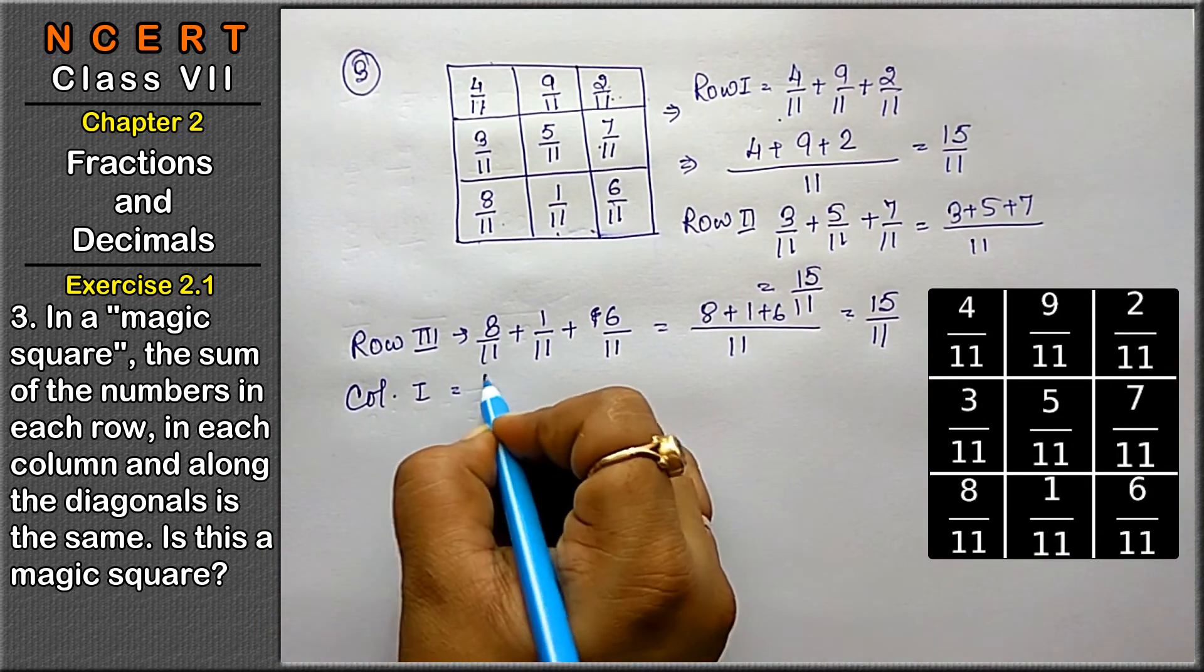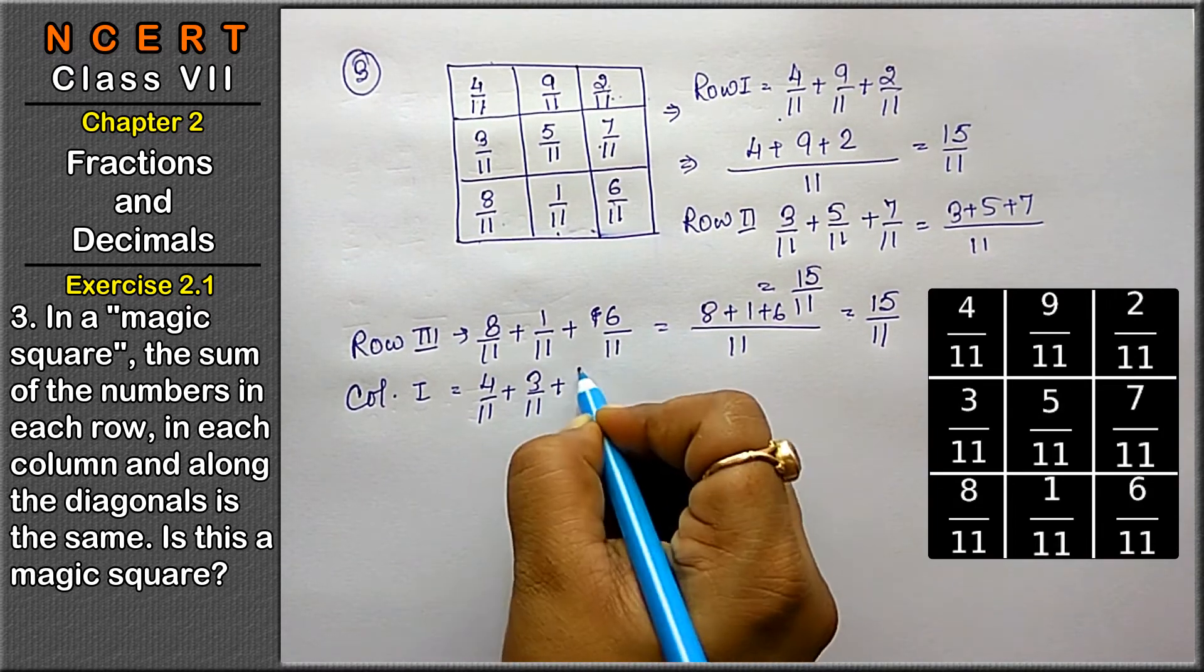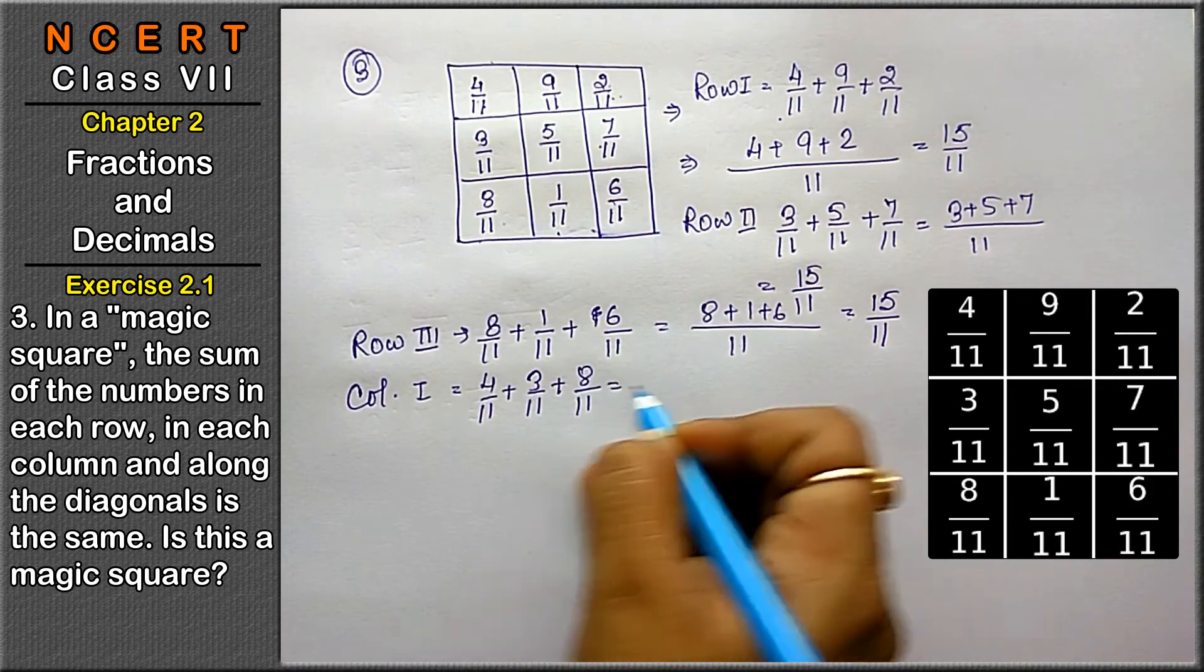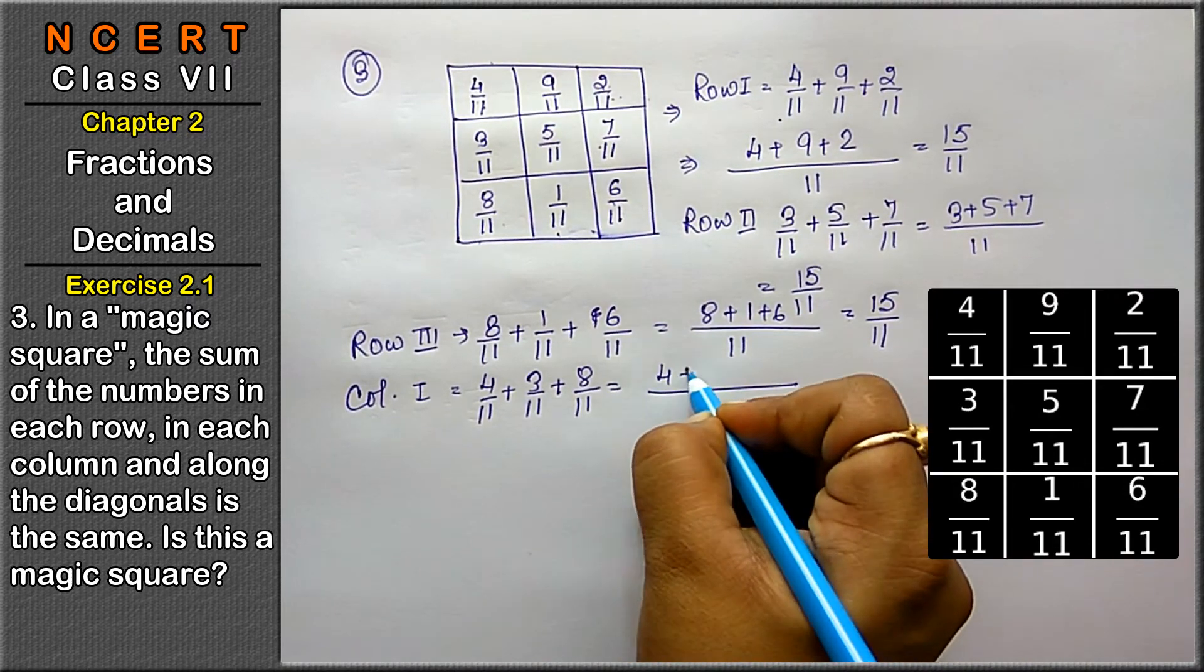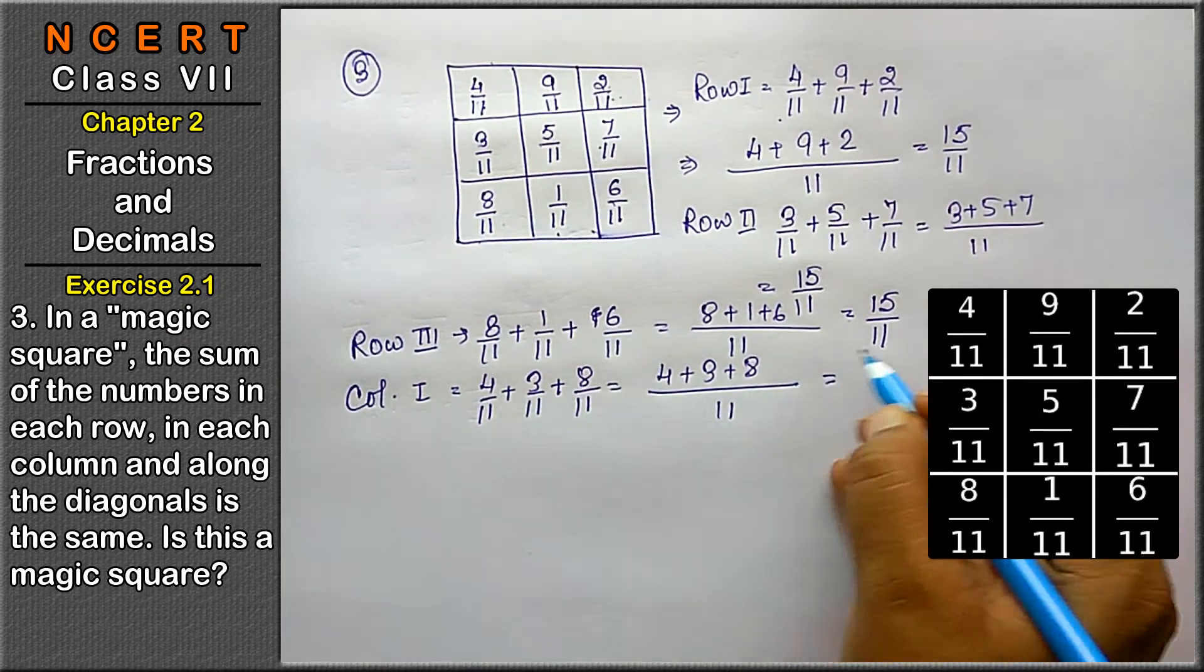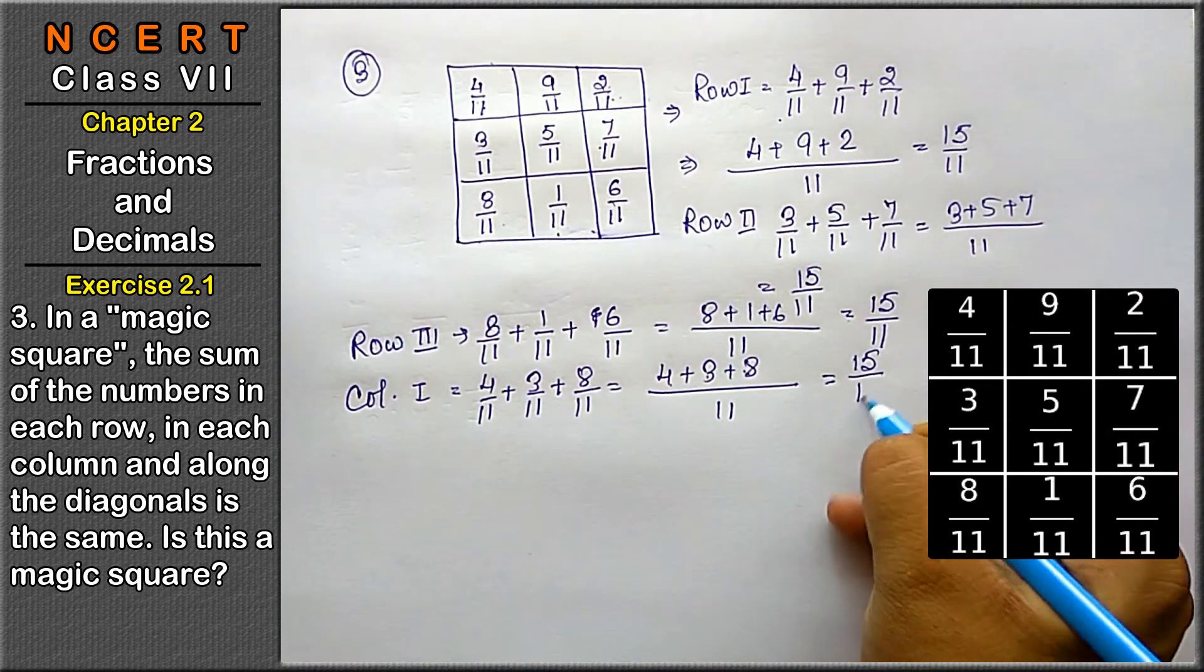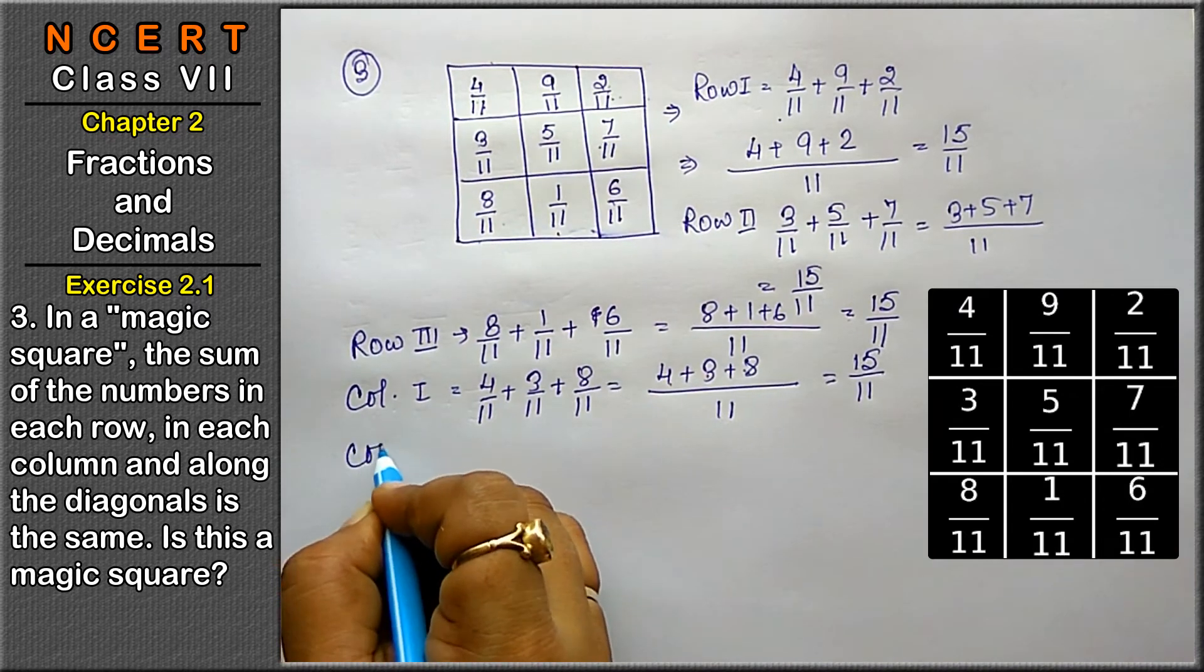Column first, 4 upon 11 plus 3 upon 11 plus 8 upon 11. 11 is the LCM. 4 plus 3 is 7, 7 plus 8 is 15 upon 11 again. Let's see the column second.